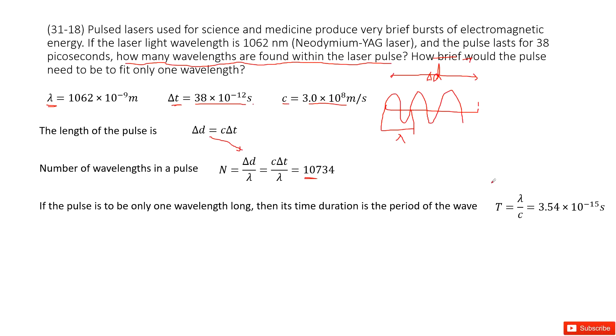That means the period T should equal lambda, the wavelength, divided by C. Lambda divided by C. Input the given quantity and you get it. Thank you.